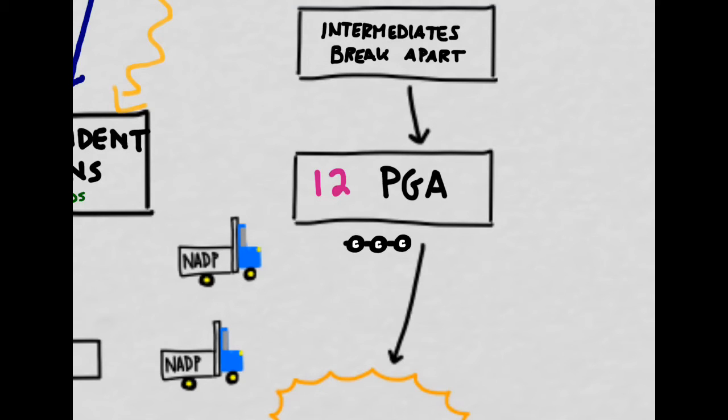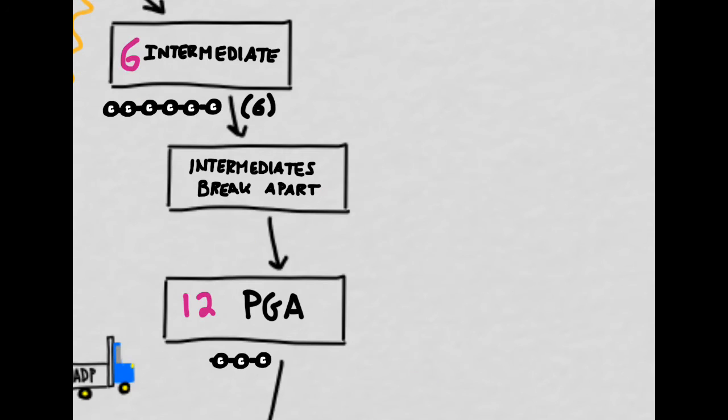The real name for PGA is 3-phosphoglyceric acid, so we're going to call it PGA. Just to make sure we're on the same page in terms of the number of carbons, let's do some quick math.